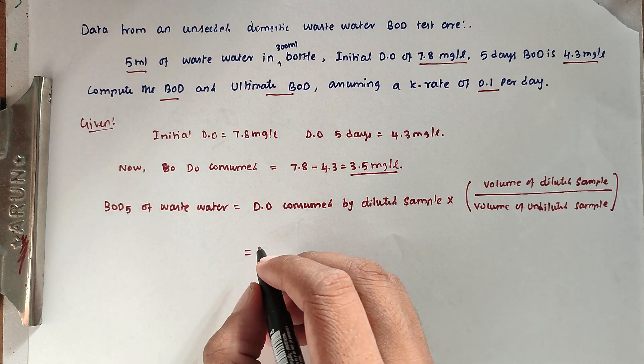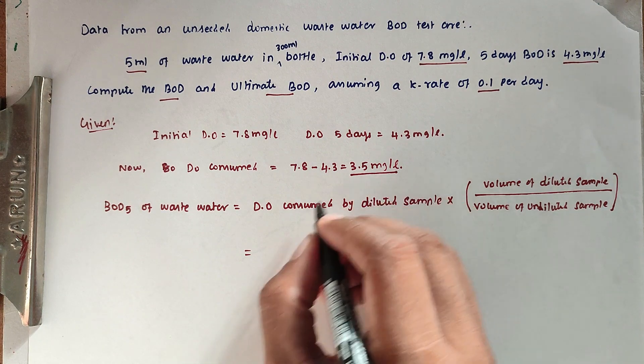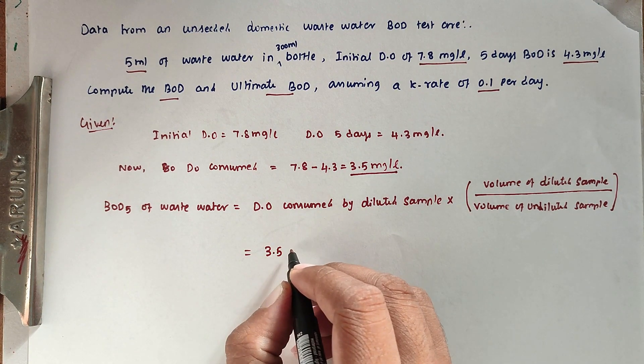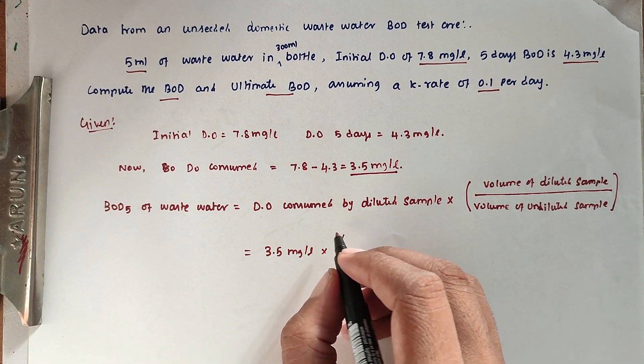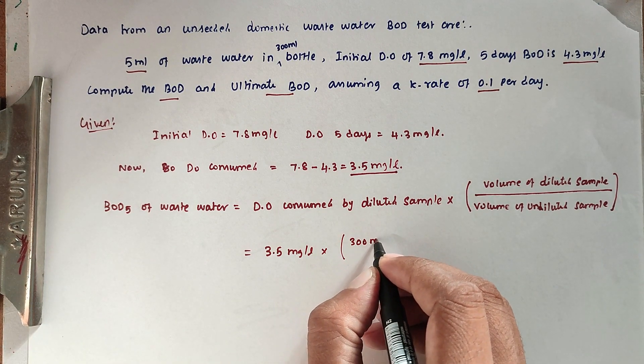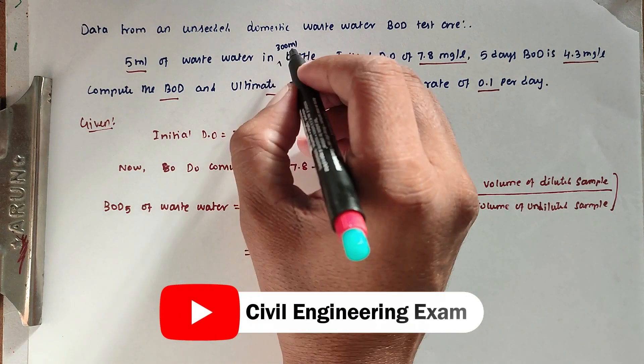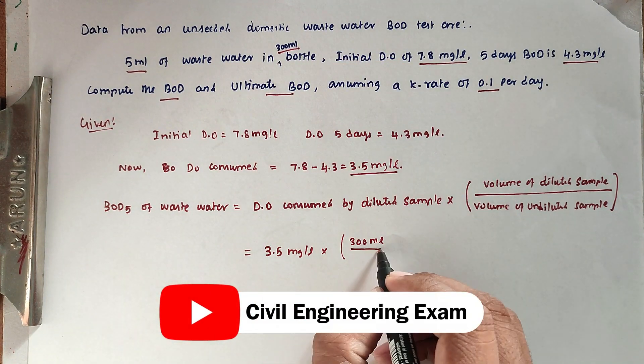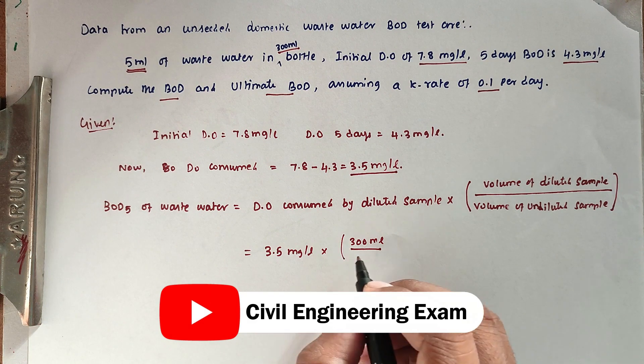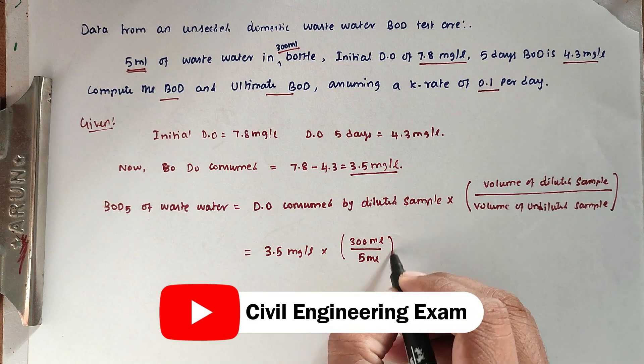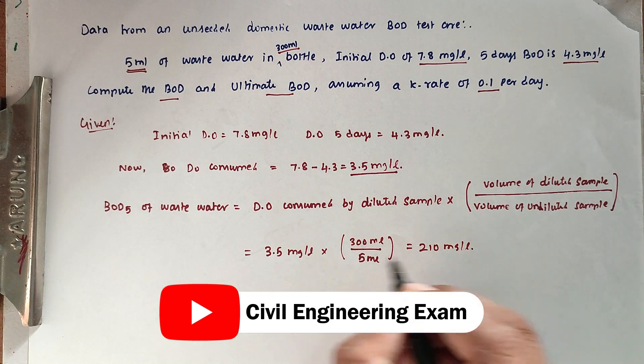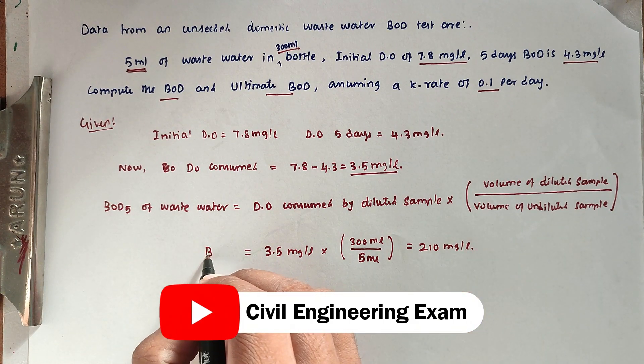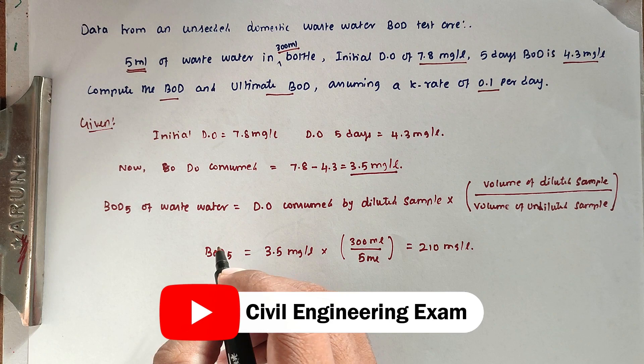Substituting values: DO consumed is 3.5 mg/L, volume of diluted sample is 300 ml, divided by volume of undiluted sample which is 5 ml. This gives us 210 mg/L.